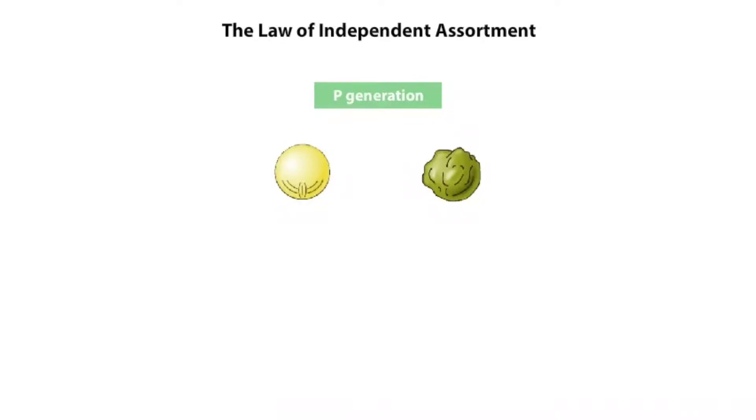Mendel wanted to know what would happen if true breeding plants with round yellow seeds were crossed with true breeding plants with wrinkled green seeds.